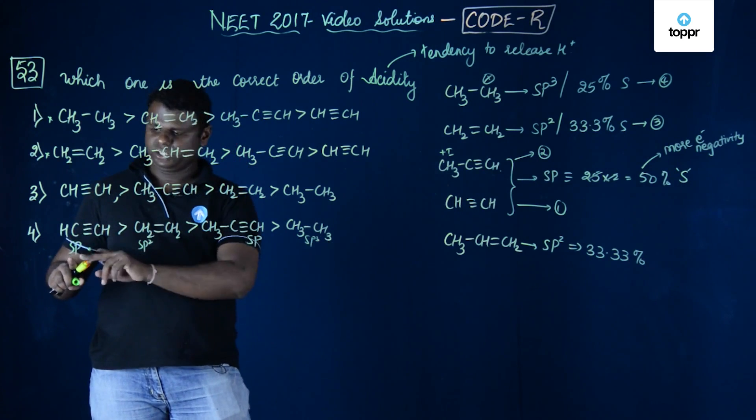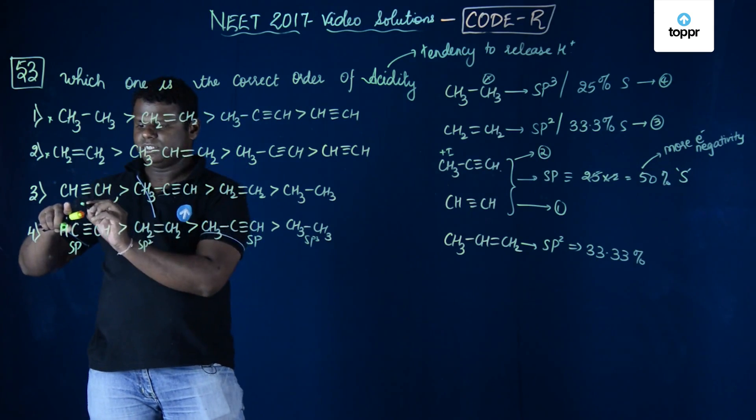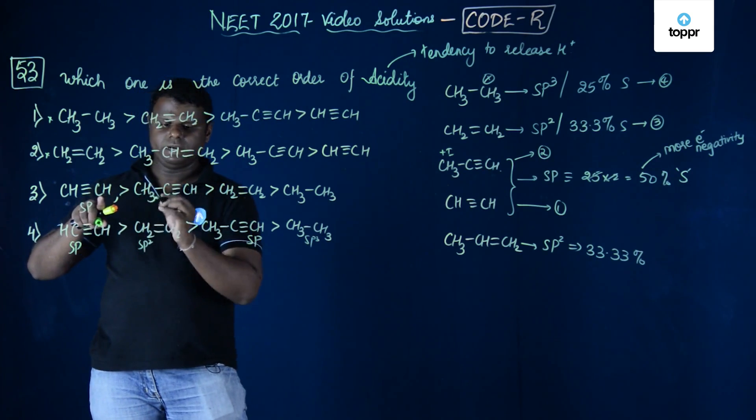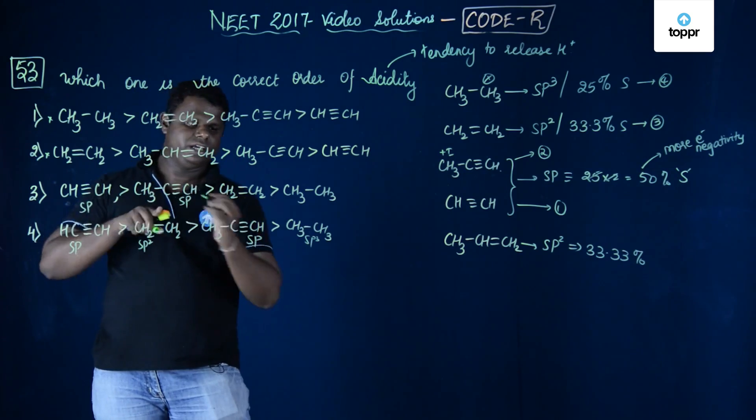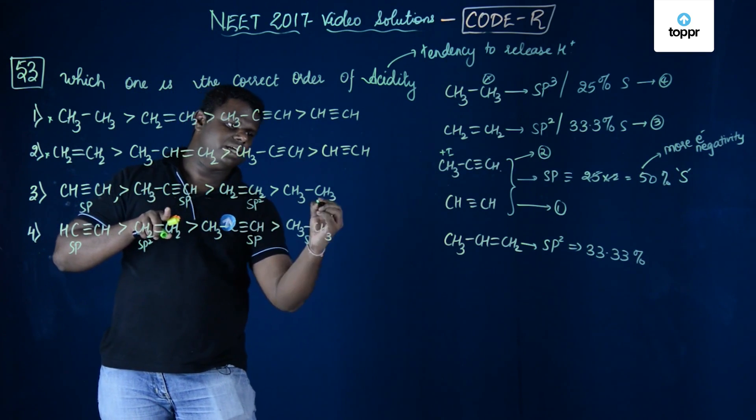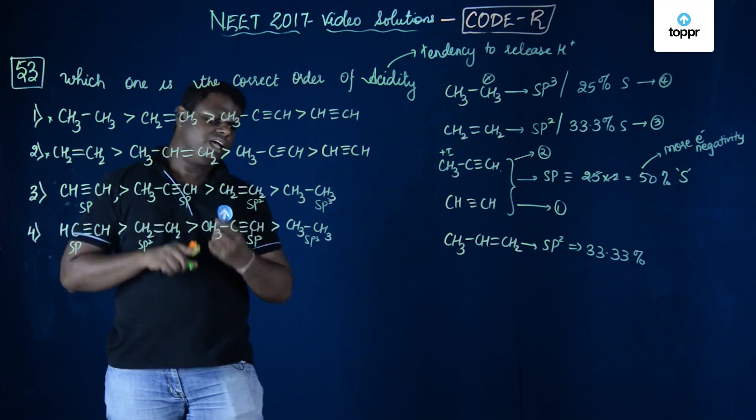Actually the order should be SP, SP. This is again SP, SP carbon, again this is SP carbon, this is SP2 carbon and then this is SP3 carbon.